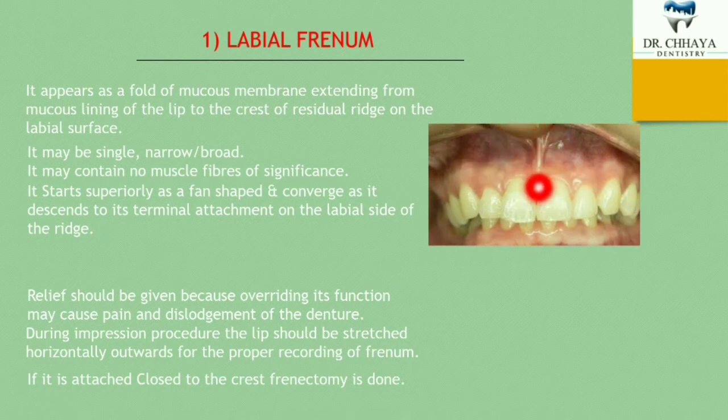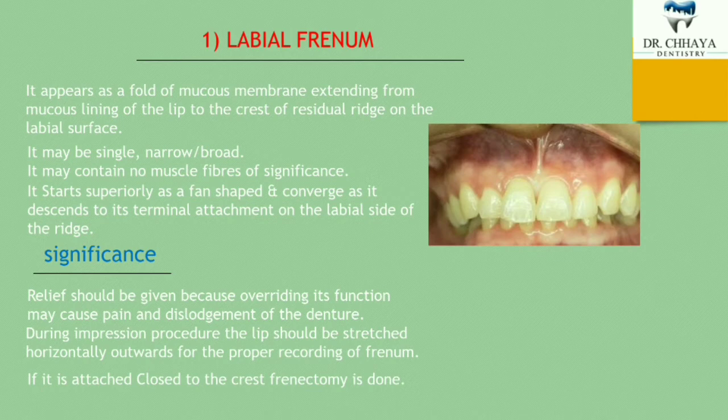The significance of the labial phrenum: relief must be given because overriding its function may cause pain and dislodgement of the denture. Whenever we deliver a denture to the patient, this phrenum should be relieved — we must give proper clearance for the labial phrenum, otherwise it will cause discomfort to the patient and also dislodge the denture.